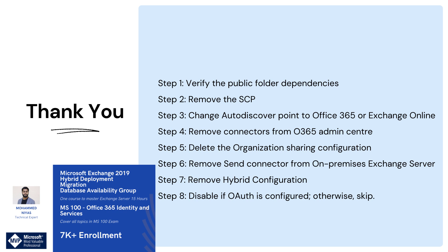We also logged into the Exchange Online admin center and removed the connectors and the organization relationship configured by the hybrid configuration wizard. Then we logged into the on-premises Exchange admin center and removed the send connectors, including the one for external email. Finally, if OAuth is configured in the Exchange hybrid deployment you can remove it, but in most environments you can skip that step. Let's move to the next video.